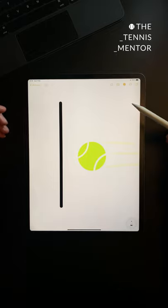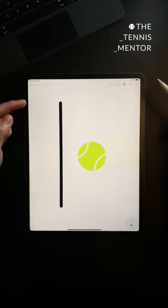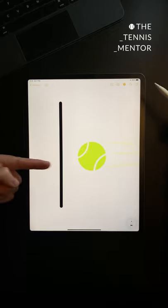Your racket angle is the angle in which your racket strings are pointing as you make contact with the ball. In this video we're going to keep the racket angle the same, it's pointing in this direction.